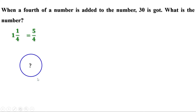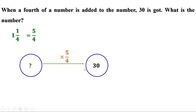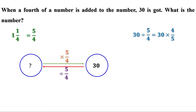We have to find the number: when it is multiplied by 5/4 it is 30. To get the number, let us come back and divide 30 by 5/4. To divide a number by a fraction, multiply by its reciprocal: 30 divided by 5/4 equals 30 multiplied by 4/5. 6 fives are 30, and 6 times 4 is 24.